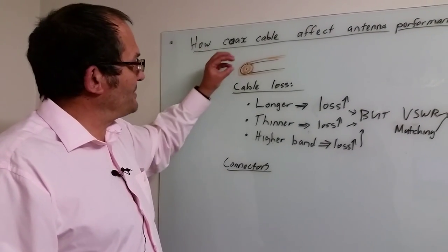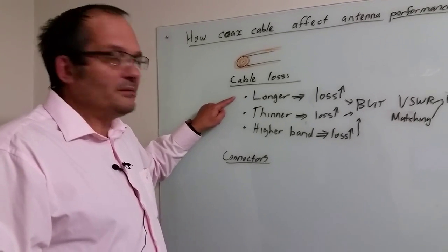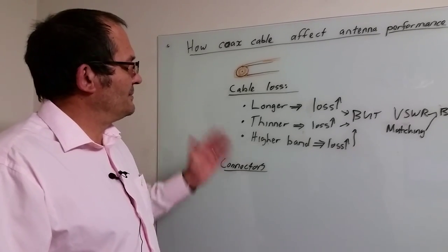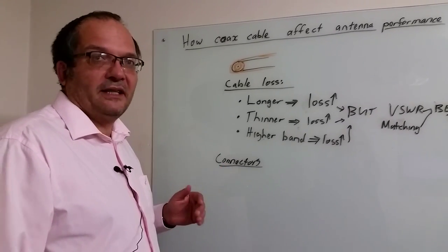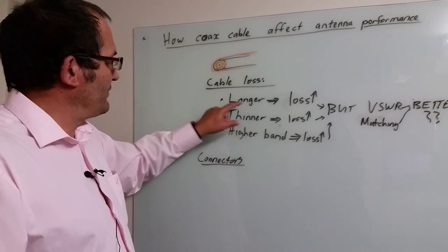Cable loss - typically the longer the cable, the more the loss. So if a five meter cable has one dB loss, then 10 meters will have twice that in dB loss. Loss goes up the longer the cable, so you have to be careful.